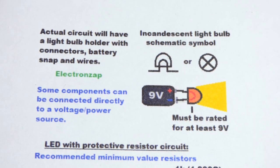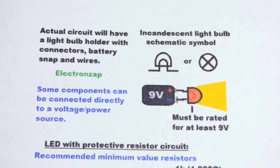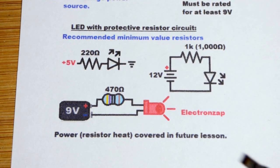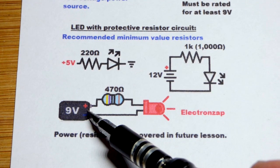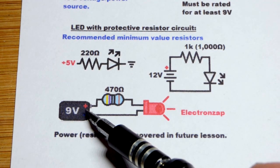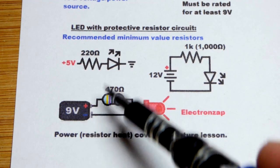Light bulbs are rare in basic electronics now, so let's look at the LED. The LED really cannot be connected directly to a voltage source. It can if it's very low, but for the most part you want a protective resistor.